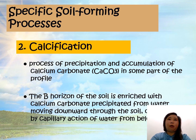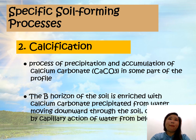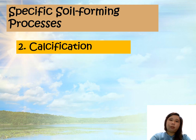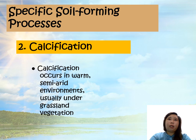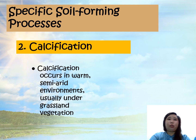The B horizon is enriched with calcium carbonate precipitated from water moving downward through the soil or upward by capillary action of water from below. This process is common in warm, semi-arid environments, usually under grassland vegetation.